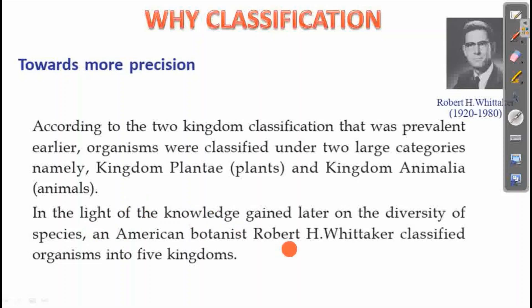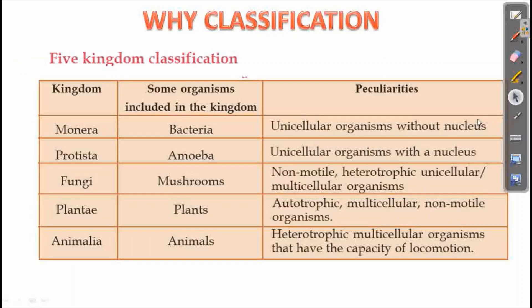In the light of knowledge gained later on the diversity of species, an American botanist Robert H. Whittaker classified organisms into five kingdoms. This is the five kingdom classification.